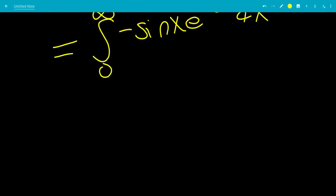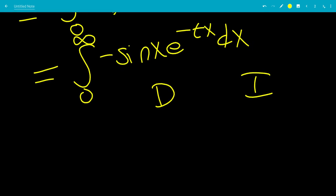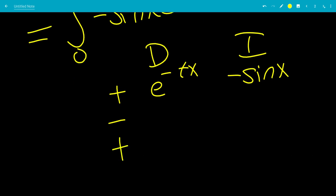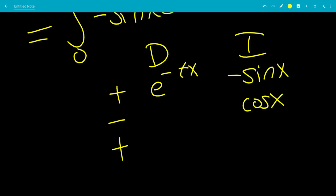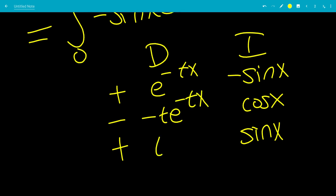Now we use the DI method (integration by parts). We differentiate e to the negative tx and integrate negative sine x. The signs alternate: plus, minus, plus. The integral of negative sine x is cosine x, since the derivative of cosine x is negative sine x. The integral of cosine x is sine x. Differentiating e to the negative tx gives negative t times e to the negative tx, then t squared times e to the negative tx.